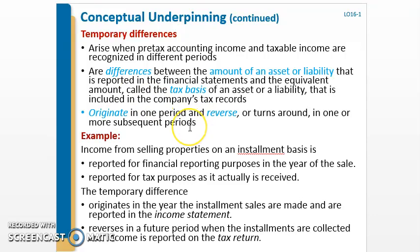The temporary difference reverses — meaning something may be taxable in one period, say 2017, but not on the financial statements in 2017. Then in 2018 it appears on the financial statements, but it's not taxable because it was already taxed in the previous year. So the idea is that they reverse in one or more subsequent periods.